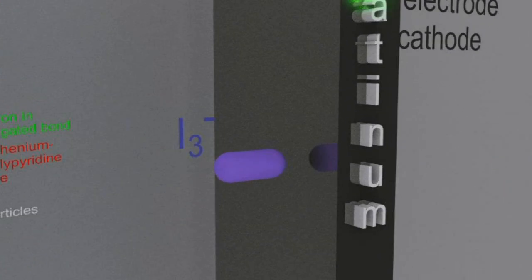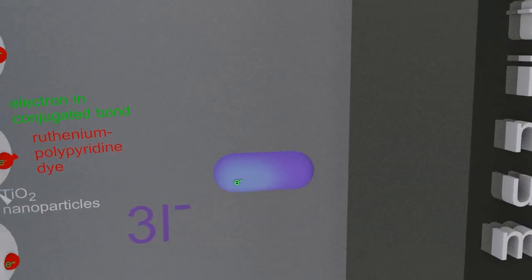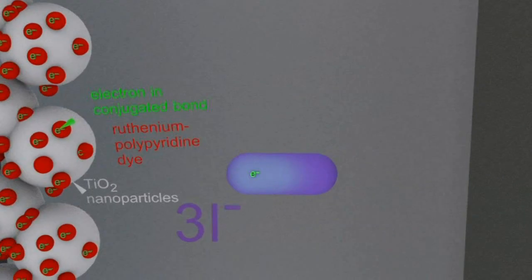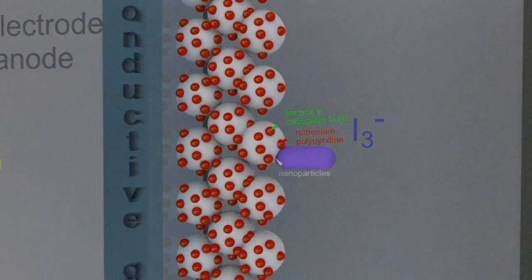The electron then passes through the circuit and does some work, maybe light a light bulb, and goes to the inert platinum cathode, the positive electrode. There it moves on to the triiodide ion which then becomes three iodide ions, and that electron is transported back to the dye so the whole thing can begin again with another light particle.